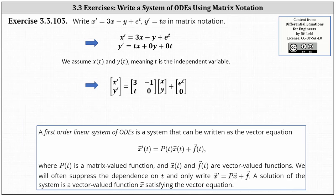And then on the right side, P of t is going to be the matrix-valued function that has the functions of t, or constants, being multiplied by x and y. So looking at the right side of both equations, because we have 3 times x minus 1 times y in the first equation, and then plus e to the t, and in the second equation,